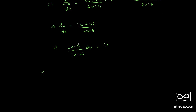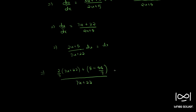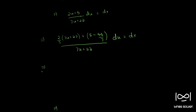We can further simplify this by partial fractions. We write (2u plus 5)/(7u plus 22) as (2/7) times (7u plus 22)/(7u plus 22) minus a remainder. Multiplying out, 2/7 gives 2u plus 44/7, so we subtract 44/7, leaving 35 minus 44 over 7, which is minus 9/7.